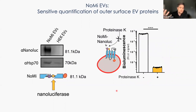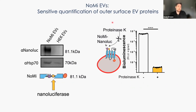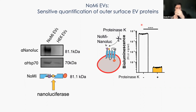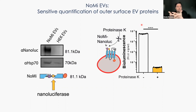Next to mCherry, we have NanoLuc on the surface. When you expose surface-exposed NanoLuc to proteinase K, it gets degraded and the signal drops enormously — confirming surface localization. Importantly, the signal numbers with NanoLuc are in the millions compared to the much lower numbers from mCherry. This is because mCherry is a single fluorescent protein, whereas one luciferase enzyme can turn over many substrate molecules, greatly boosting the detection signal.